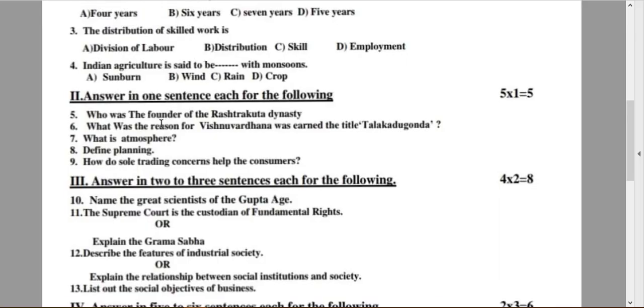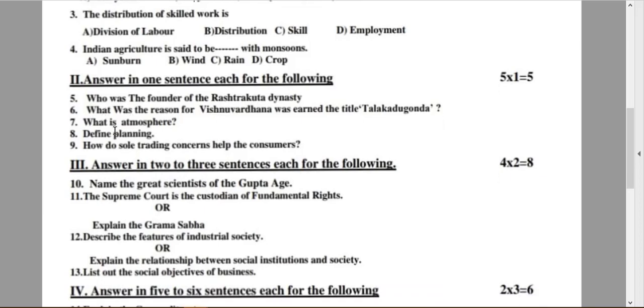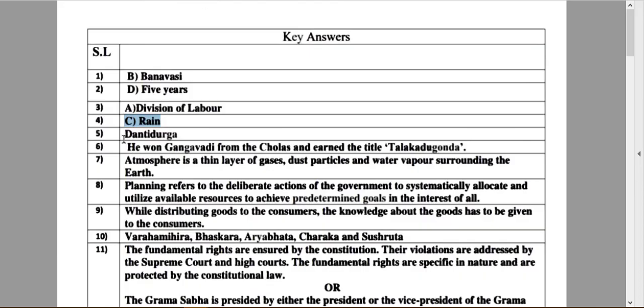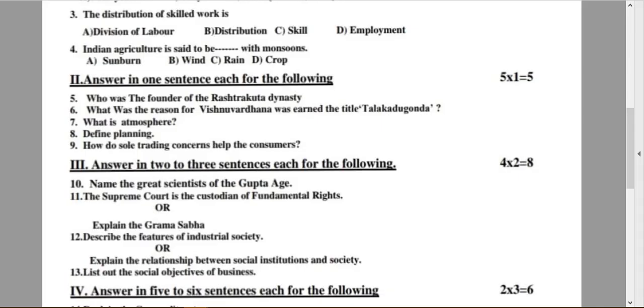Let's move on to second main. Answer in one sentence, each of the following. Here is one more question. Each one carries one mark. So, question number 5: Who was the founder of Rastrakuta dynasty? The answer is Dhanthi Durga. The founder of the Rastrakuta is Dhanthi Durga.